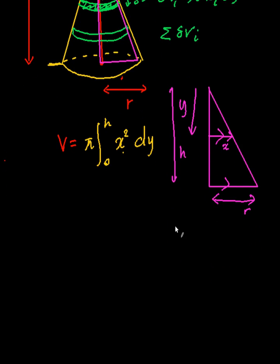From here, I can say h divided by r is equal to y divided by x. From here, x is equal to ry on h. And this is what I'm going to substitute back into my integral equation.